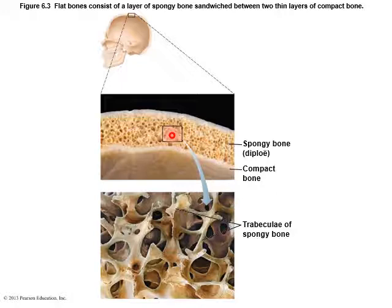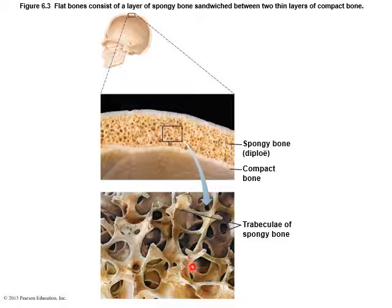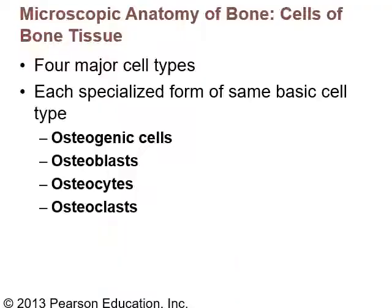Spongy bone is also called cancellous or trabecular bone, made up of little beams of bone called trabeculae that link together and make the bone look like a sponge. The unit for compact bone is called an osteon, also known by the older term the Haversian system. These osteons are made up of circular rings of bone around an opening called the central canal, which contains an artery, a vein, and a nerve — so bones have feeling.